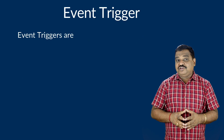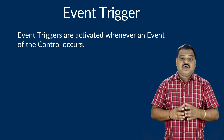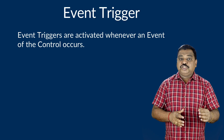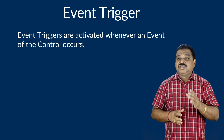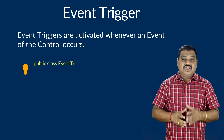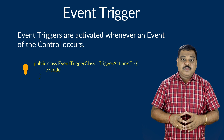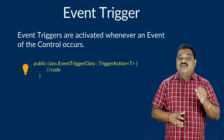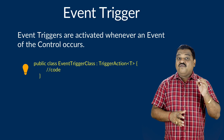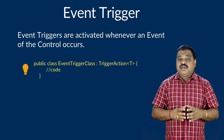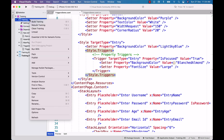Next, the most widely used trigger — the event trigger. Event triggers are activated whenever an event of the control occurs, for example if you want to change a property when the button is clicked using the Clicked event, or the text is changed using the TextChanged event. In order to handle an event trigger, we have to create a subclass of TriggerAction of T, and the subclass has to provide the implementation for the Invoke method by specifying the functionality to be executed whenever the relevant event occurs.